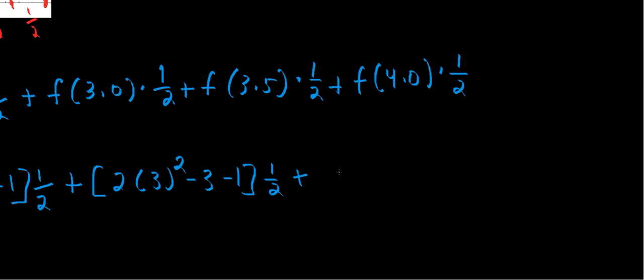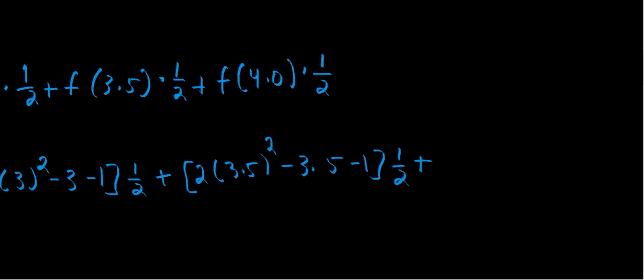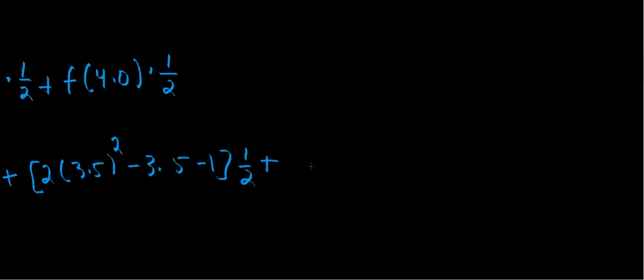Plus f of 3.5. That's 2 times 3.5 squared minus 3.5 minus 1, times 1 half. Plus f of 4 is 2 times 4 squared minus 4 minus 1 times 1 half.